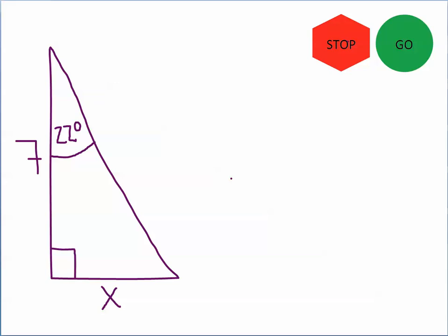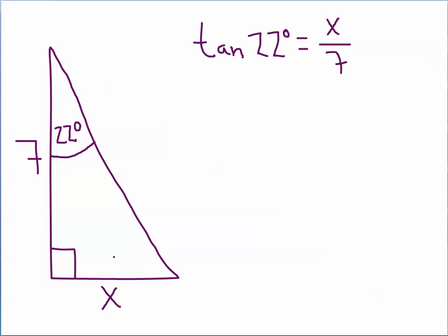Click on the stop sign and try to see if you can solve this one. All right, let's see how you did. We know the angle, we don't know the opposite side, and we know the adjacent side. As it turns out, that's the tangent function. So the tangent of 22 degrees — just some number that's stored in your calculator — is equal to x, the opposite side, divided by 7, the adjacent side.